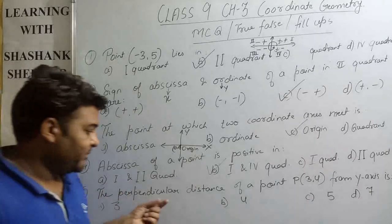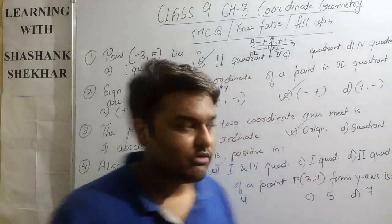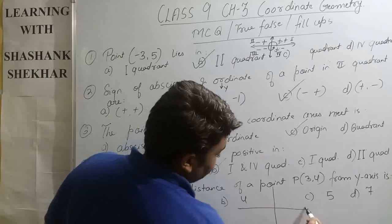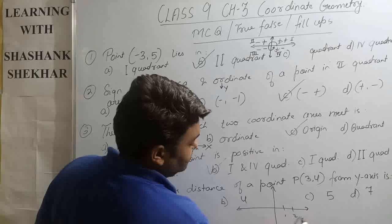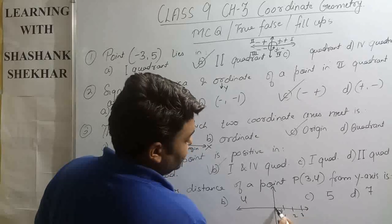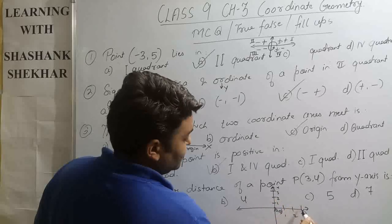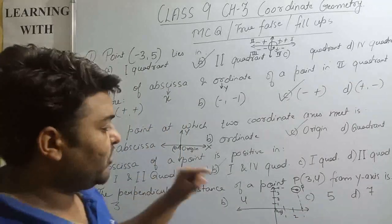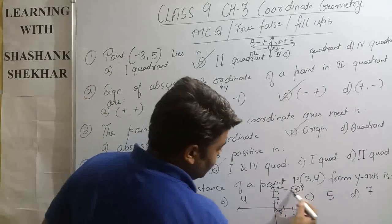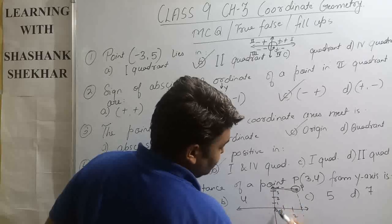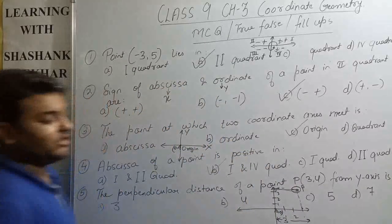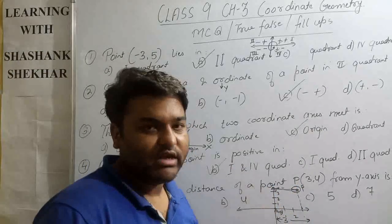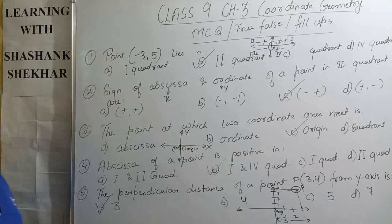Question five: the perpendicular distance of a point P(3, 4) from the y-axis. We can mark this point: x is 3 and y is 4. The perpendicular distance from the y-axis is the horizontal distance, which equals the x-coordinate, that is 3 units. So option A, 3, is correct — three units is the perpendicular distance of point P(3, 4) from the y-axis.